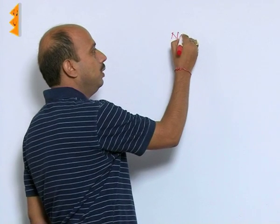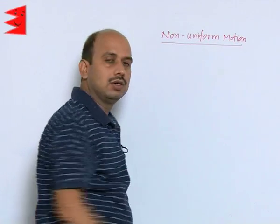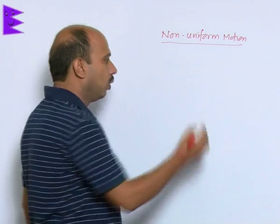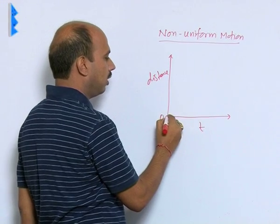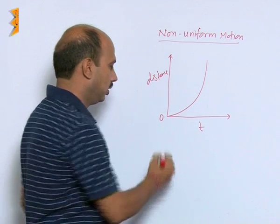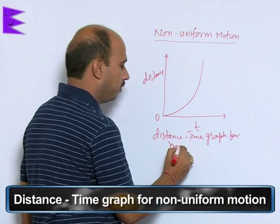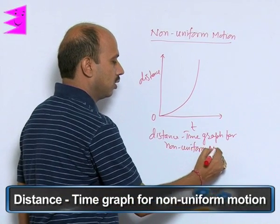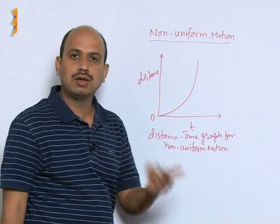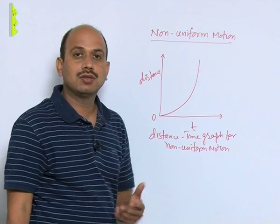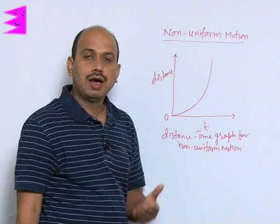Now we will do non-uniform motion. Non-uniform motion is that motion in which the distance travelled by the body is unequal in equal intervals of time. We have done this graph earlier: here we took time T on the X axis and distance on the Y axis, and the graph was a curve. This graph represents non-uniform motion — it is the distance-time graph for non-uniform motion. When the body is travelling more distance in equal intervals of time, every time distance is increasing, we can say the body is accelerating. So when the body has acceleration, we can draw the velocity-time graph for a body having uniform acceleration.